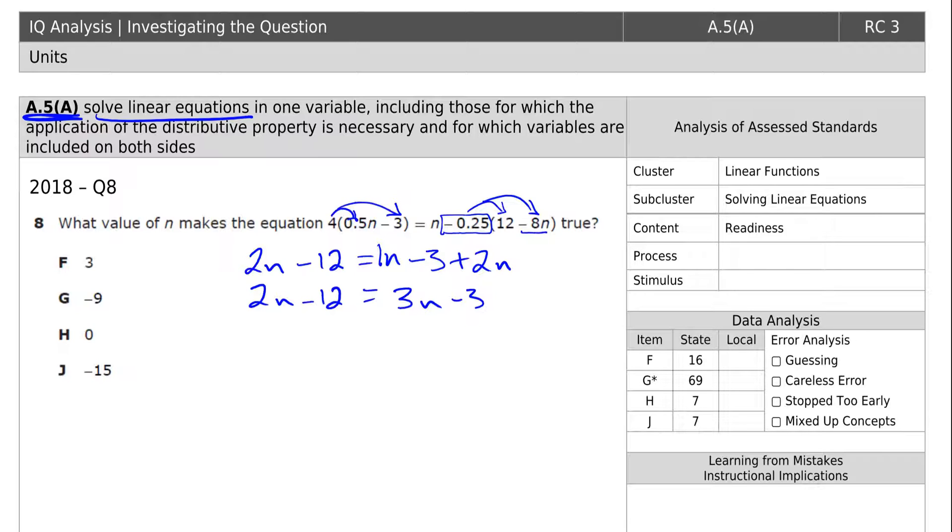We need to combine the n's, get the n's on the same side, and the regular numbers on the other side. We could bring this 3n over here, but then that would leave us with negative, so I'm going to bring this 2n over. Minus 2n, minus 2n. Negative 12 is equal to 3 minus 2 is 1n, or just n, minus 3.